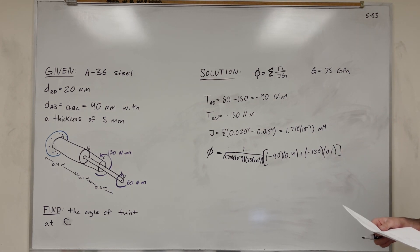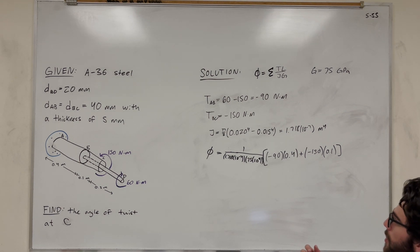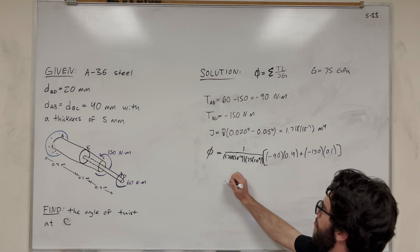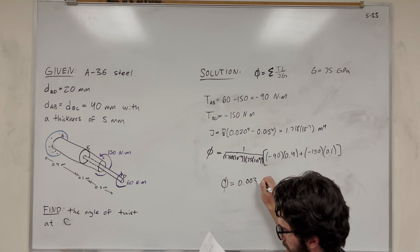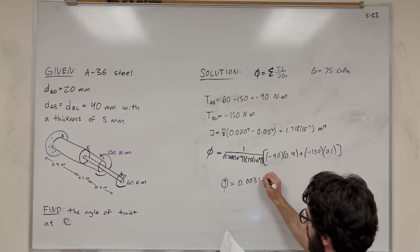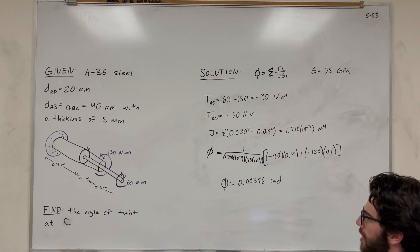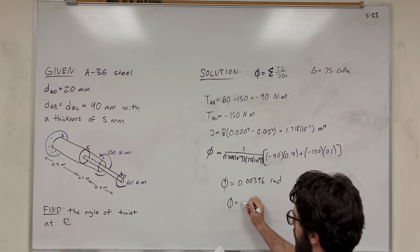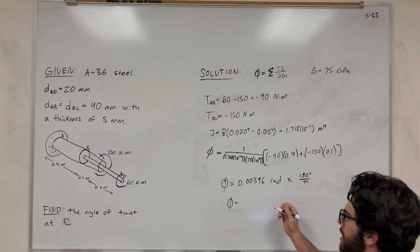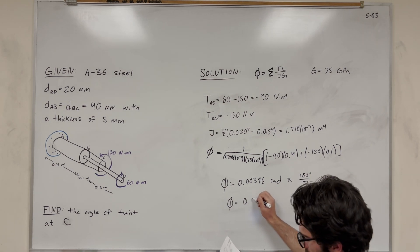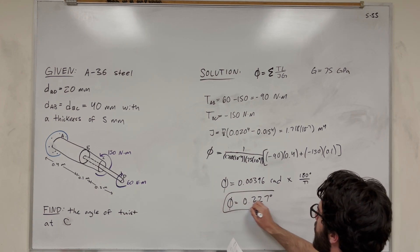You're going to get a negative number here. However, the angle of twist, it doesn't really matter if it's negative or positive. It just wants to see how much this actually gets twisted. You get 0.00396 radians. Now we don't want it in radians, we want it in degrees. So we're going to convert by multiplying by 180 degrees over pi. You get 0.227 degrees. And that's our final answer.